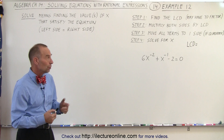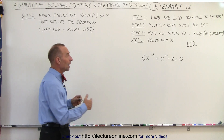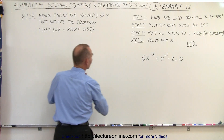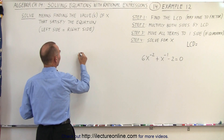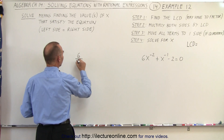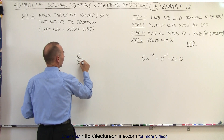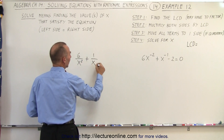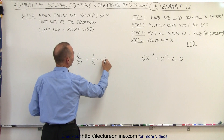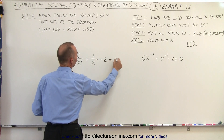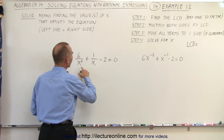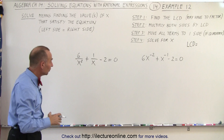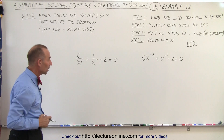Matter of fact, what we could do is we could go ahead and rewrite this as follows. We can rewrite this as 6 over x squared plus 1 over x to the first power minus 2 equals 0. And then we realize that the lowest common denominator is x squared.